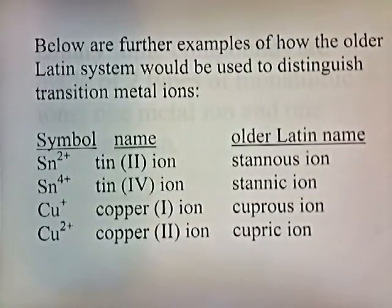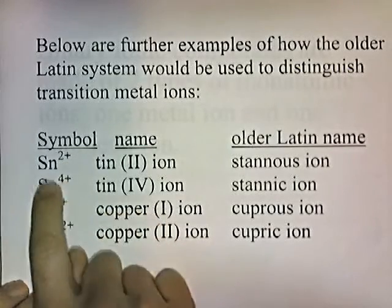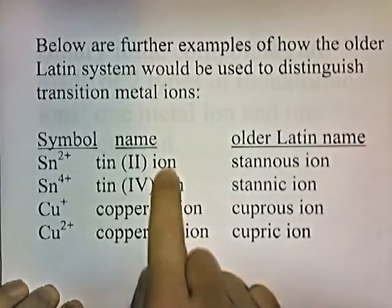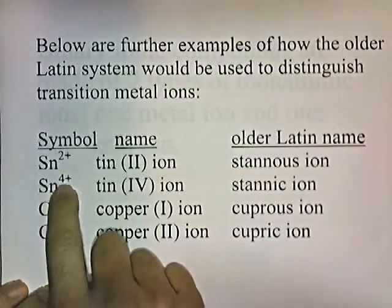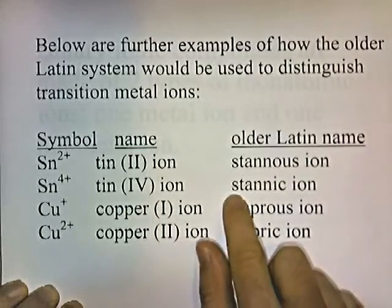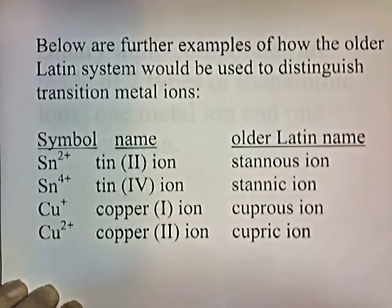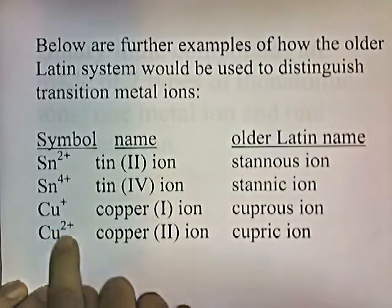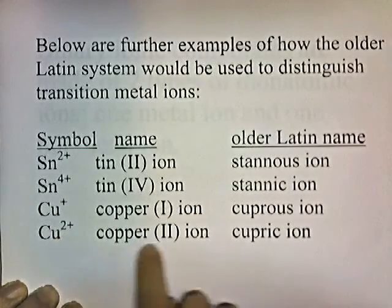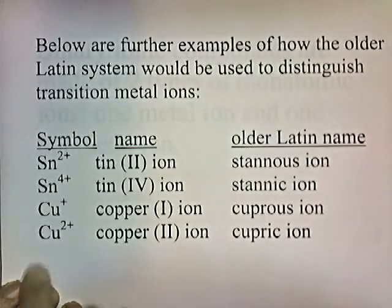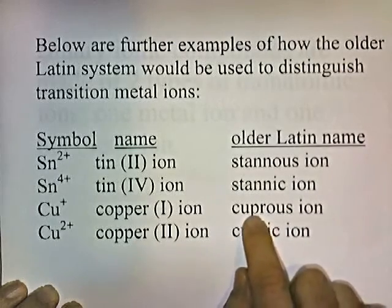Here are further examples of how the older Latin system distinguishes transition metal ions. Tin 2+ would be called tin 2 ion by modern standards; the older name is stannus ion. Tin 4+ would be called stannic ion by the old Latin name, since plus 4 is a higher oxidation state than plus 2. Similarly, copper with a plus 1 charge is copper 1 ion, and in the old Latin system it's cuprous ion. Copper with a plus 2 charge is copper 2 ion, or cupric ion in the old system.